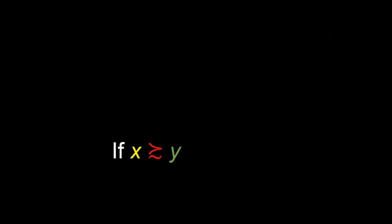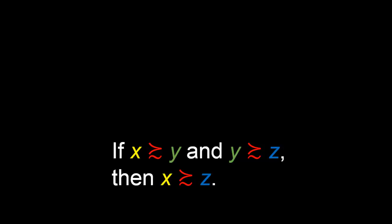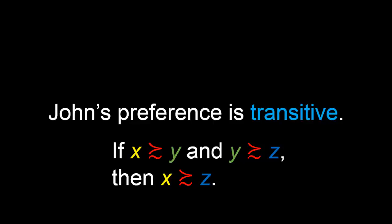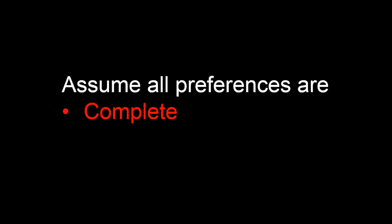Similarly, suppose that whenever John weakly prefers object x to object y, and weakly prefers object y to object z, we can automatically conclude — without any additional information — that he also weakly prefers x to z. In this case, we say that John's weakly-preferred-to relation satisfies the axiom of transitivity, or more simply, that John's preference is transitive. We will assume, henceforth, that all preferences always satisfy the axiom of transitivity.